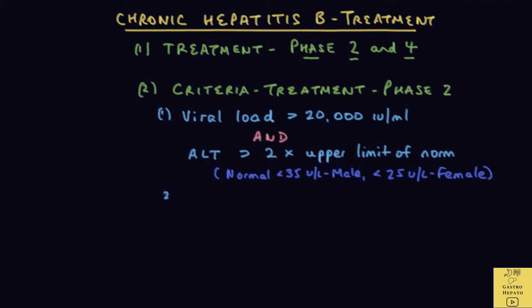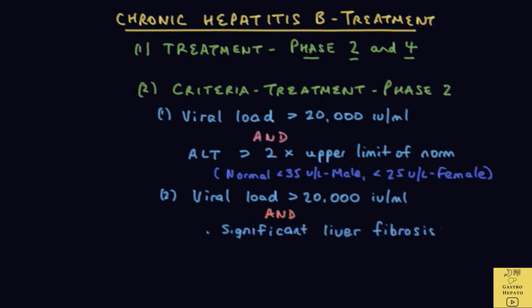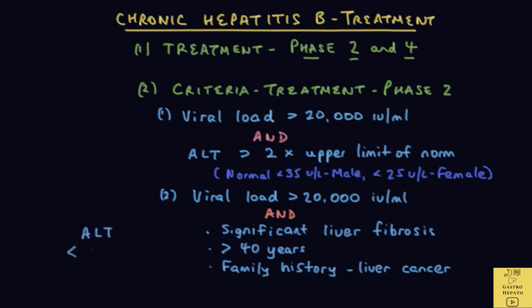The second group of phase 2 patients who are treated are those with a viral load of more than 20,000 IU per ml who also meet the following criteria: significant liver fibrosis, age above 40, or a family history of liver cancer. The reason is that such patients have a higher risk of liver cancer if the disease progresses. In this second group, the liver enzyme ALT could be less than twice the upper limit of normal.